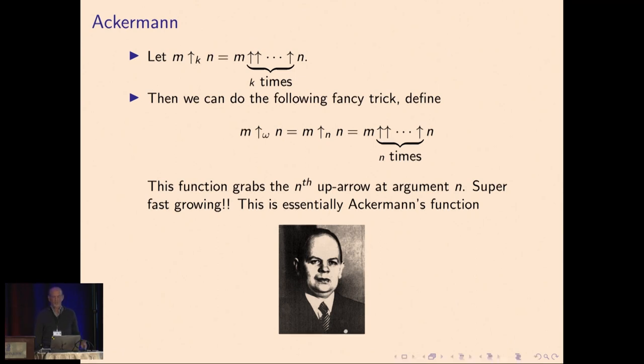In other words, the function arrow sub ω grabs the argument n and uses that number of arrows. This is essentially Ackermann's function, which was made famous by Wilhelm Ackermann.